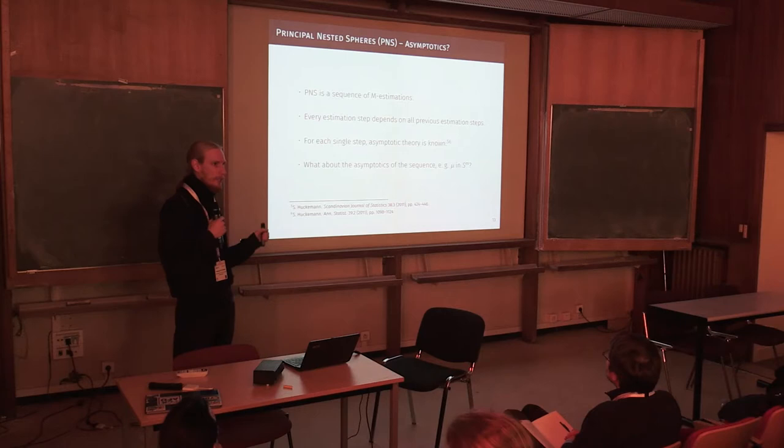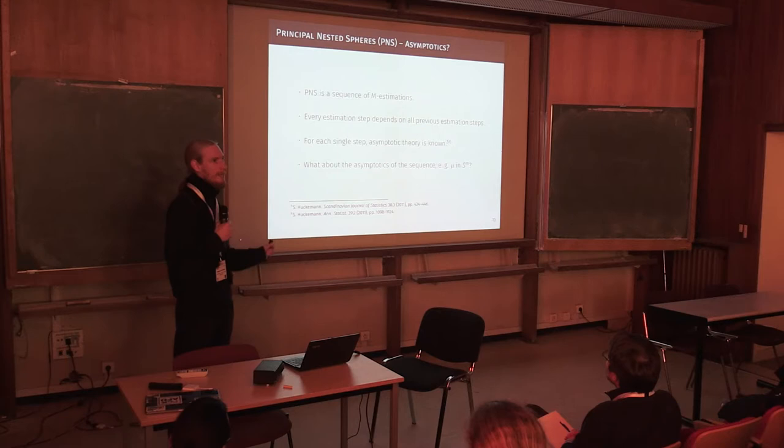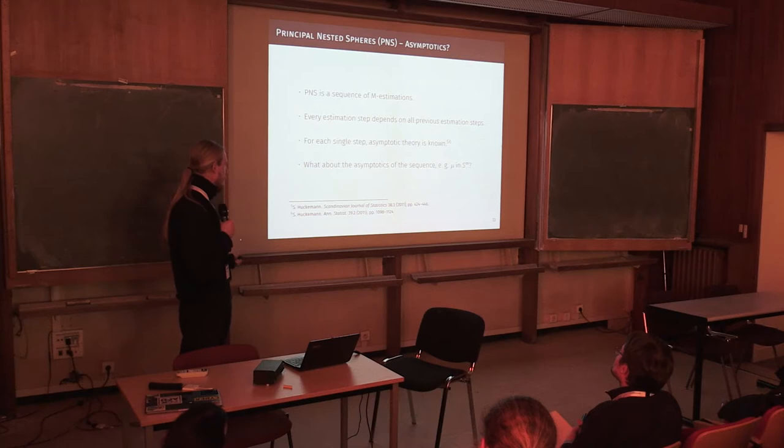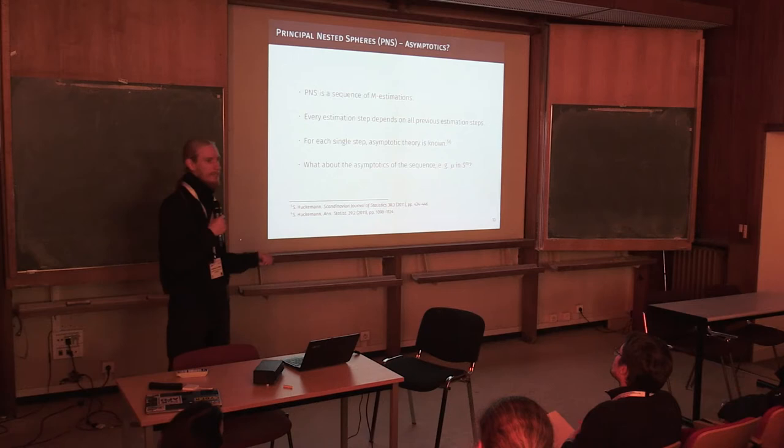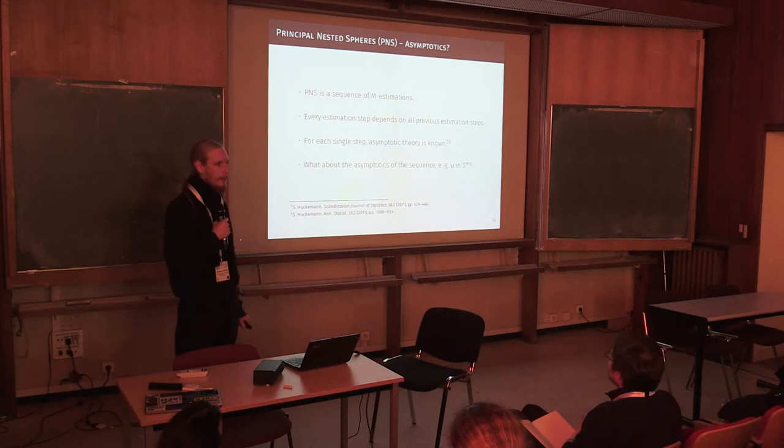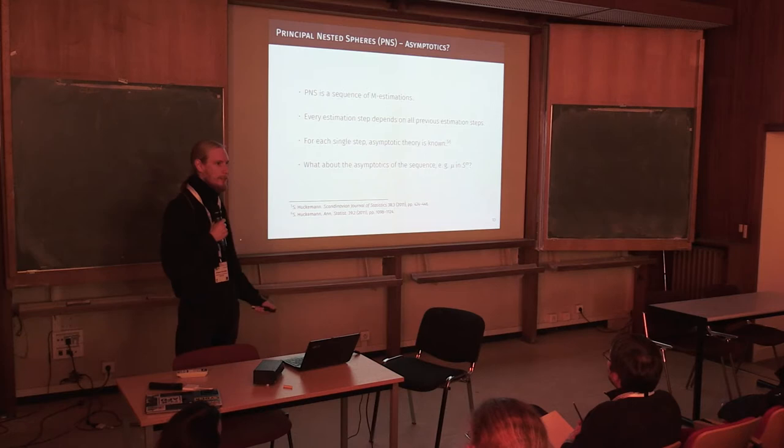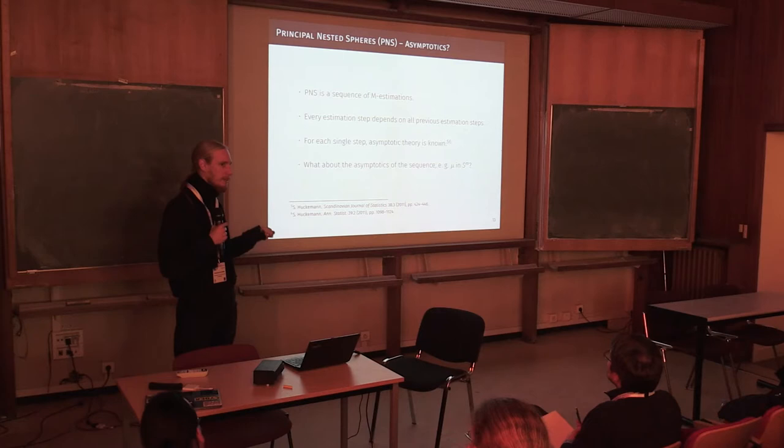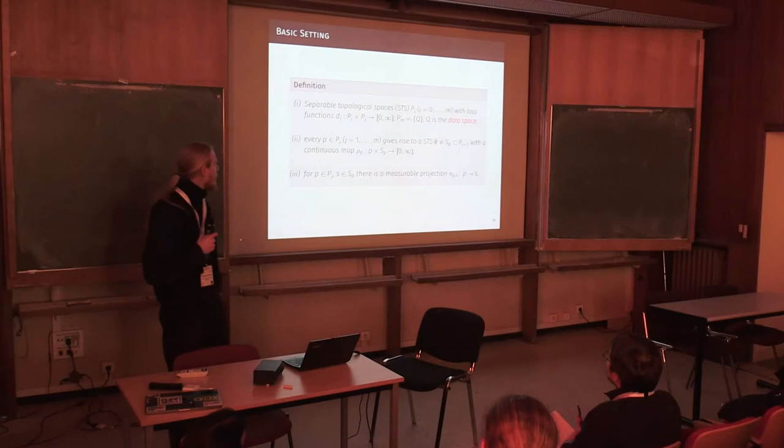every estimation step depends on all the previous estimation steps. So essentially, what I've given you there is not really the full picture of the M estimation. We have essentially an M estimation with constraints, where the constraints are all the previous M estimations. So what about the asymptotics of this sequence? And especially, what about the asymptotics of only one piece of this sequence? For example, the ultimate point we get, the nested mean, or backwards mean here. And a priori, this is not clear. We have 7 M estimations we do, and who will guarantee us that this ultimate point we get still follows any sensible asymptotics?